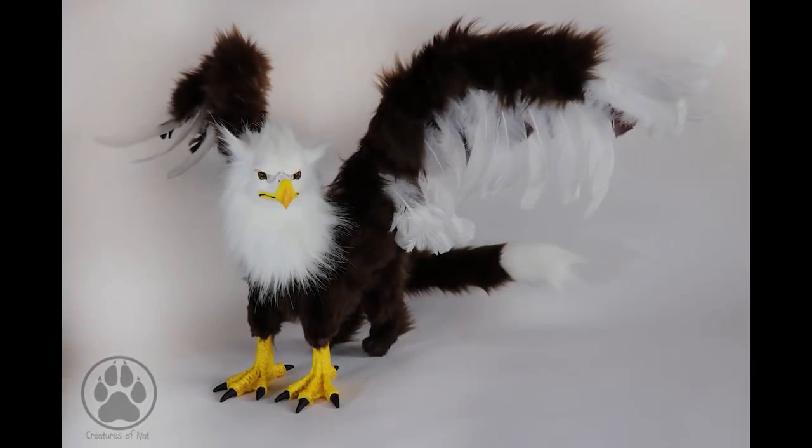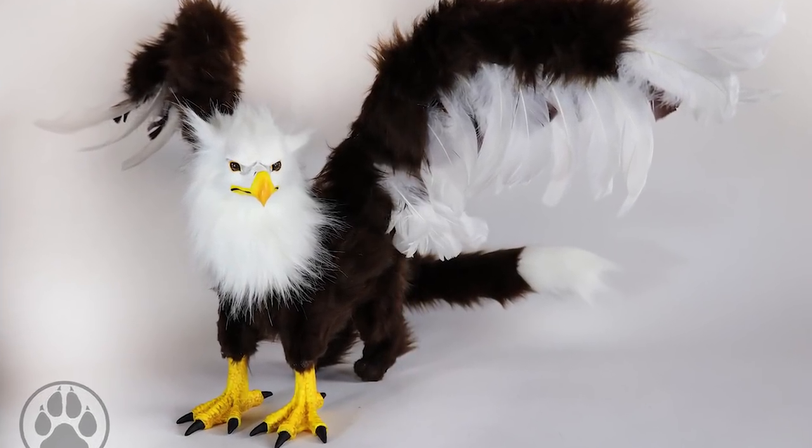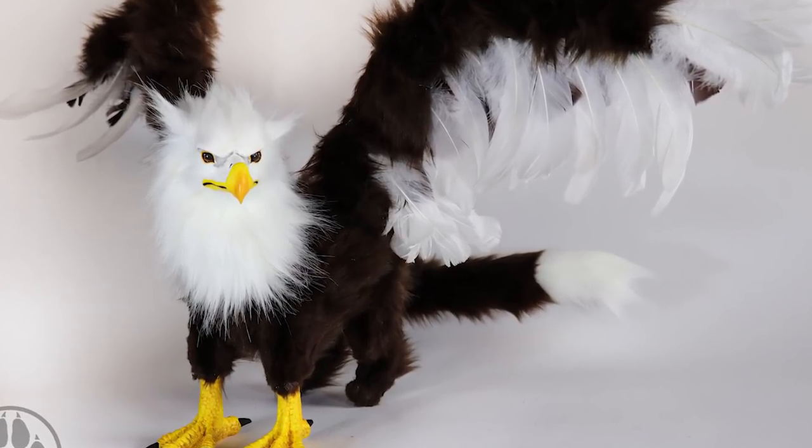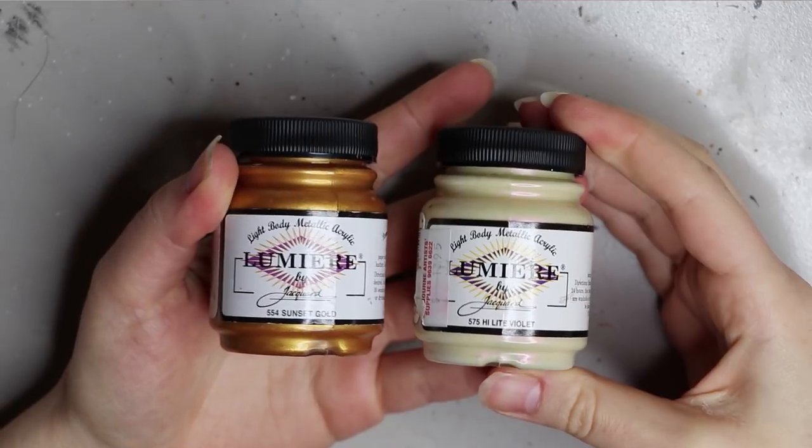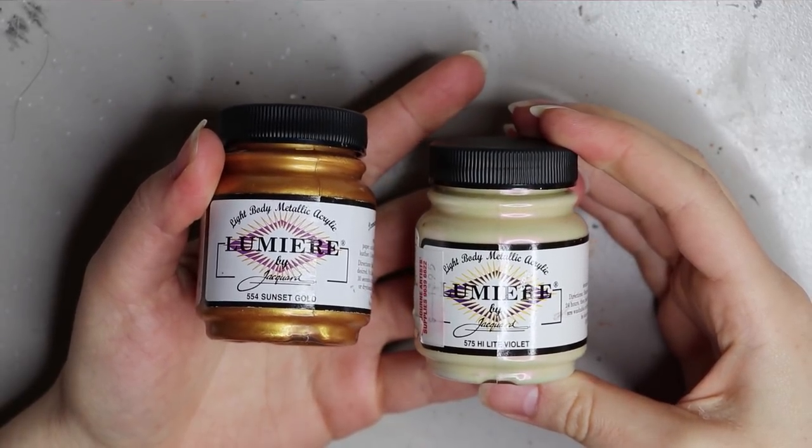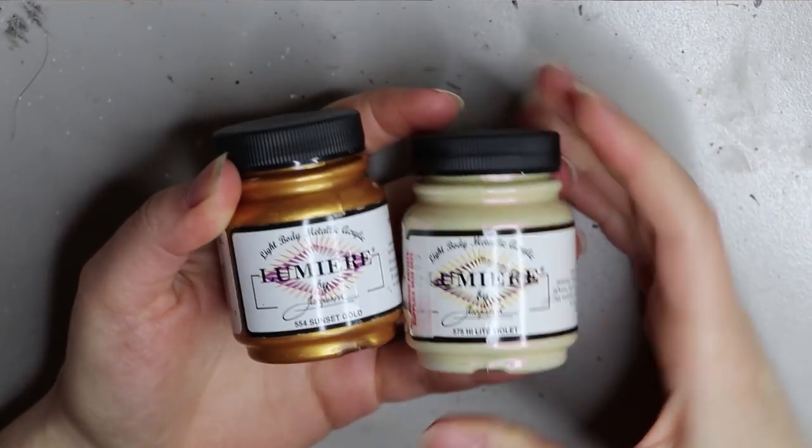Hey guys, welcome back. In today's video I'm going to be going through another Griffin Commission that I just finished, so stay tuned. First off, I'm starting with some Lumiere paint by Jacquard in sunset gold and highlight violet.